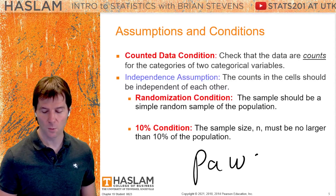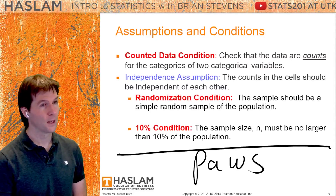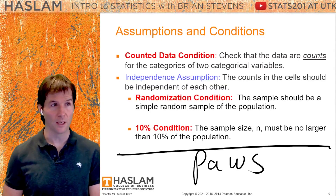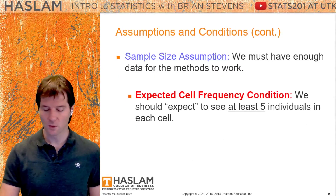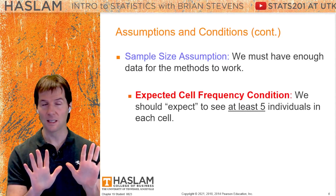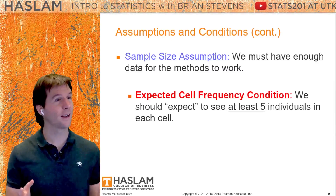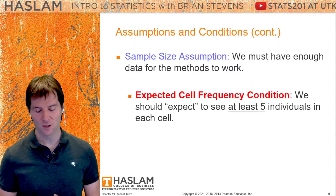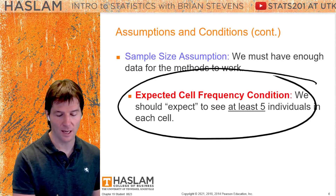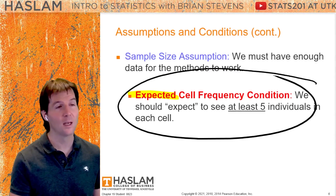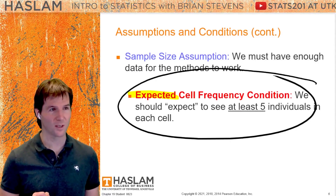We have to pause and ask what kind of data we're doing — this is where we change things up. The next condition is a new one: expected cell count. It's kind of like how we used to do success-failure, where you need at least 10 successes and at least 10 failures. But now since we have two categorical variables, we cut it in half — five is good. You need at least five expected cell counts. A trick is to check the smallest one to see if the smallest expected cell count is greater than five.